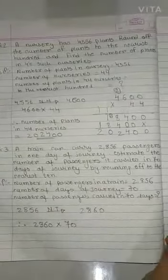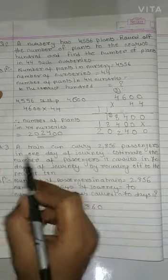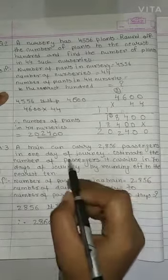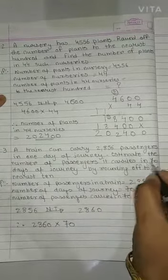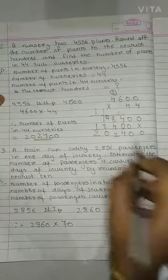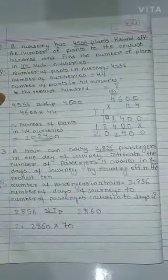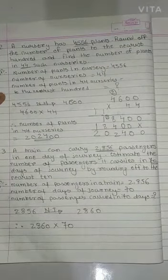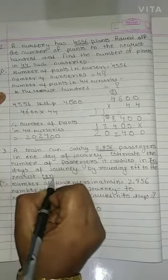Then question number 3. A train can carry 2856 passengers in one day of journey. Estimate the number of passengers it carries in 70 days. You should underline these numbers.